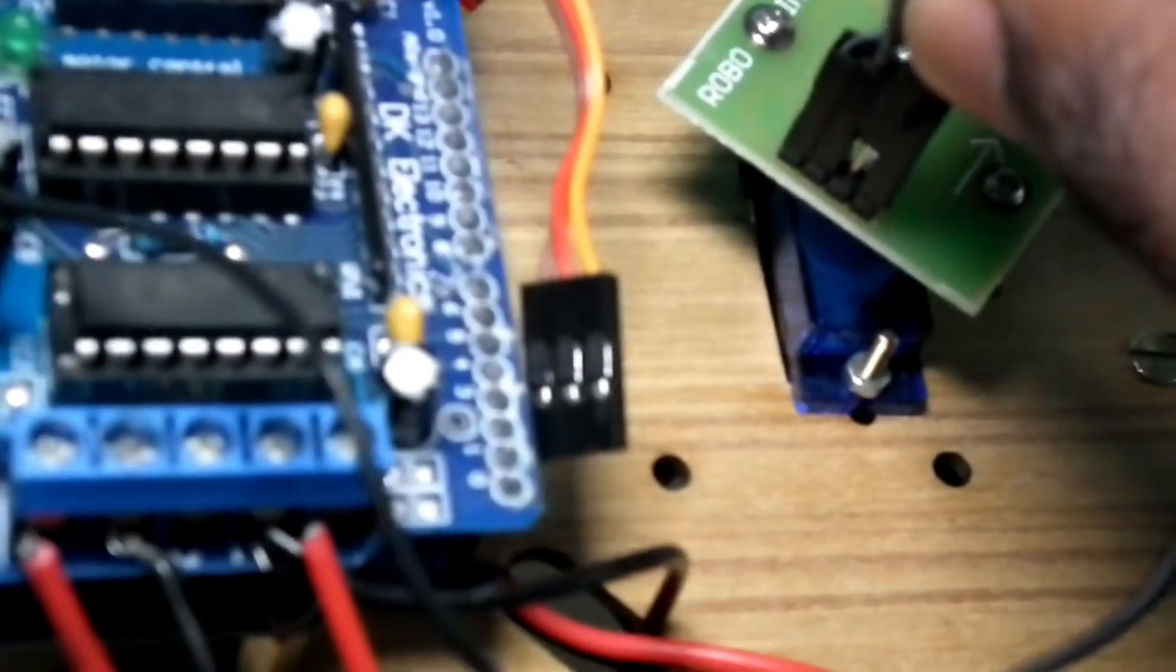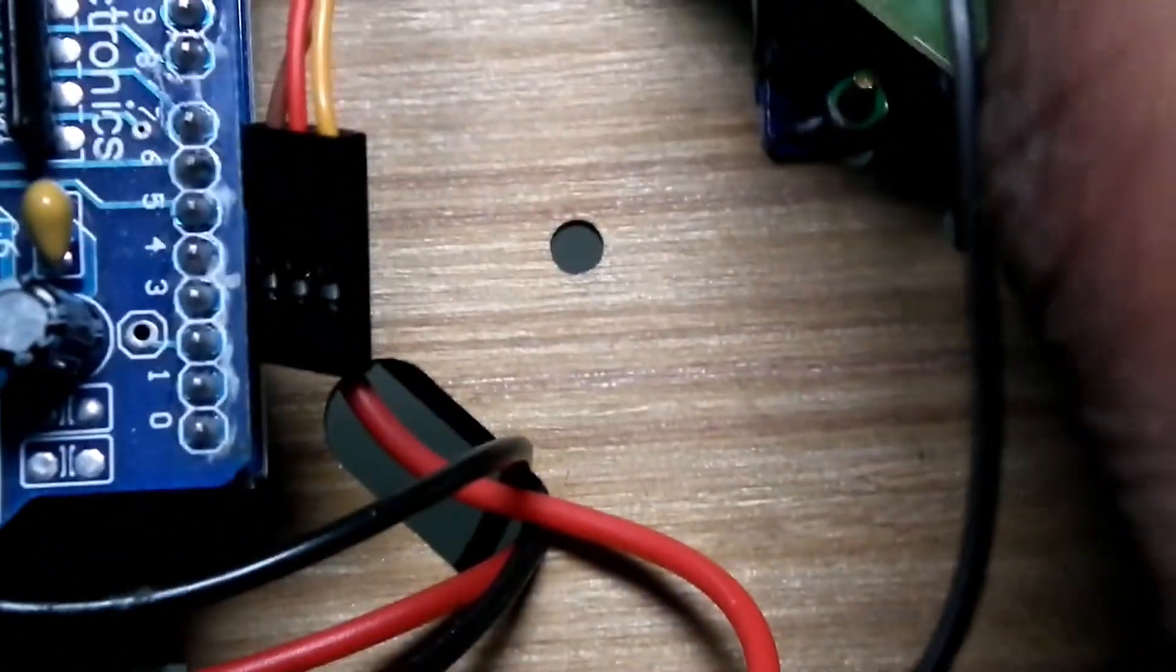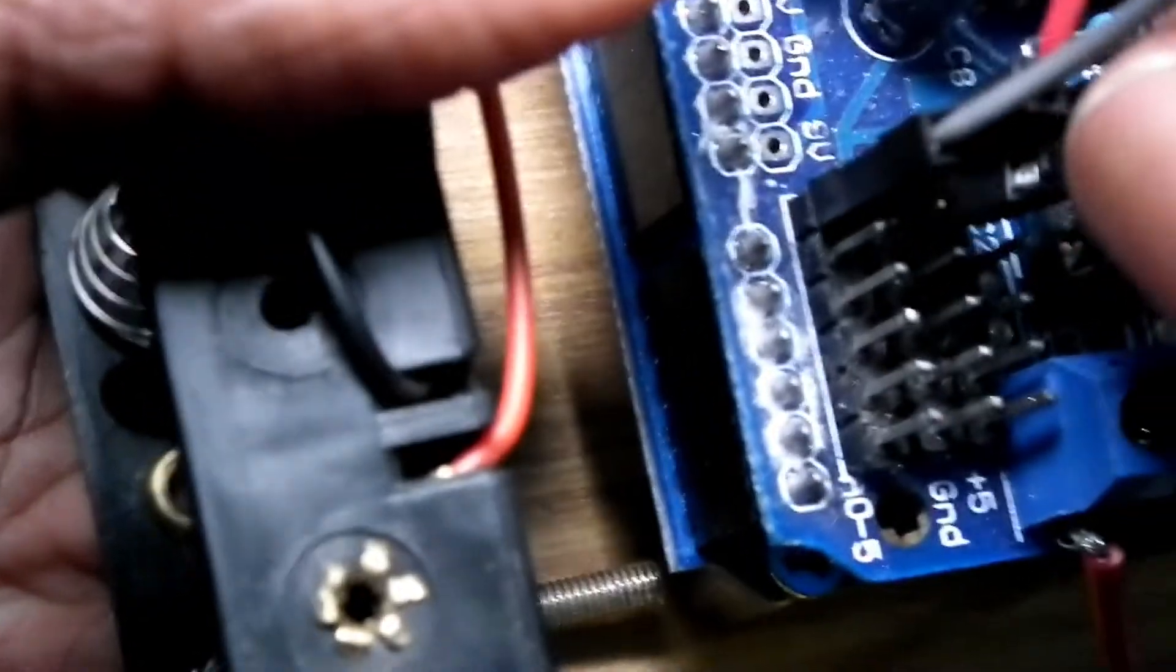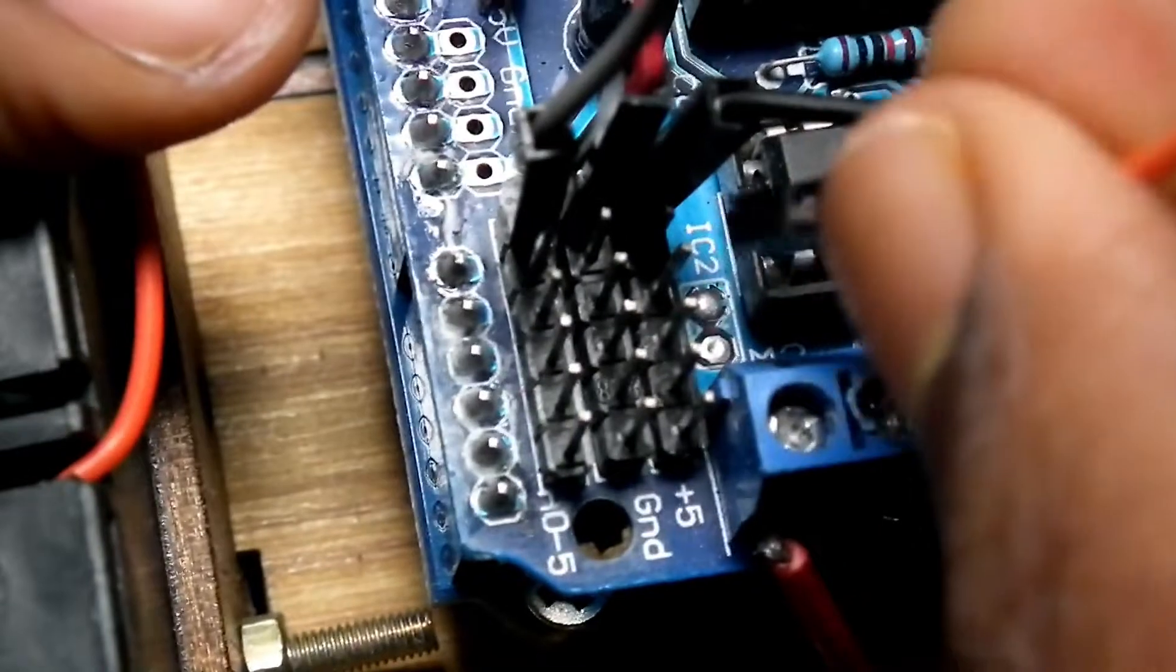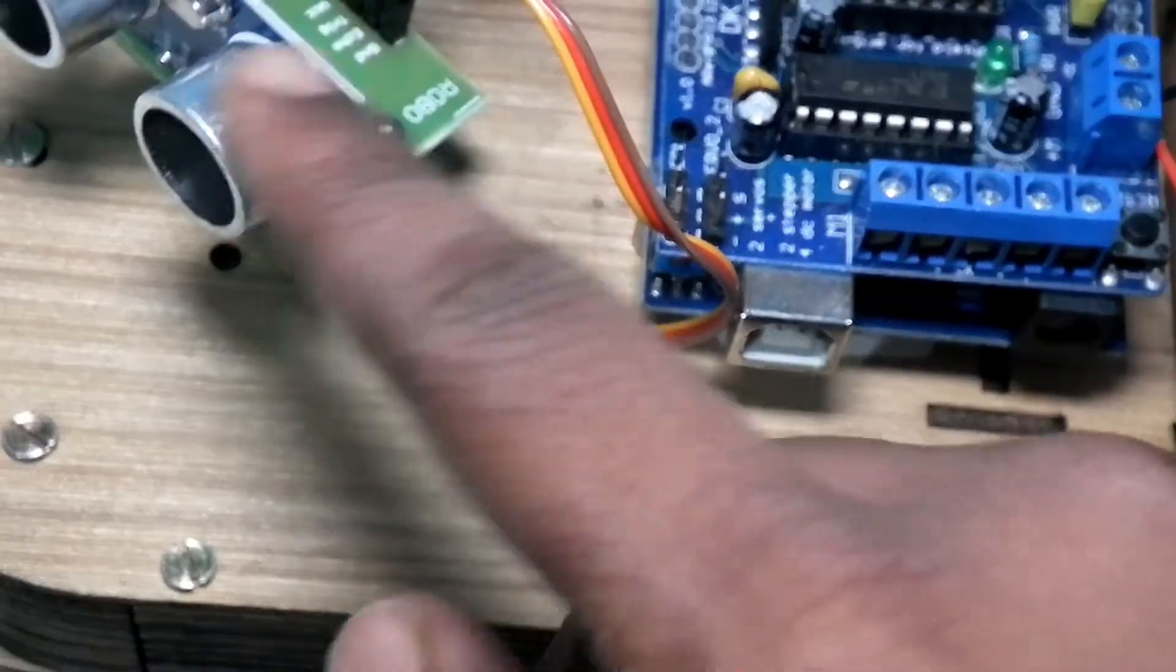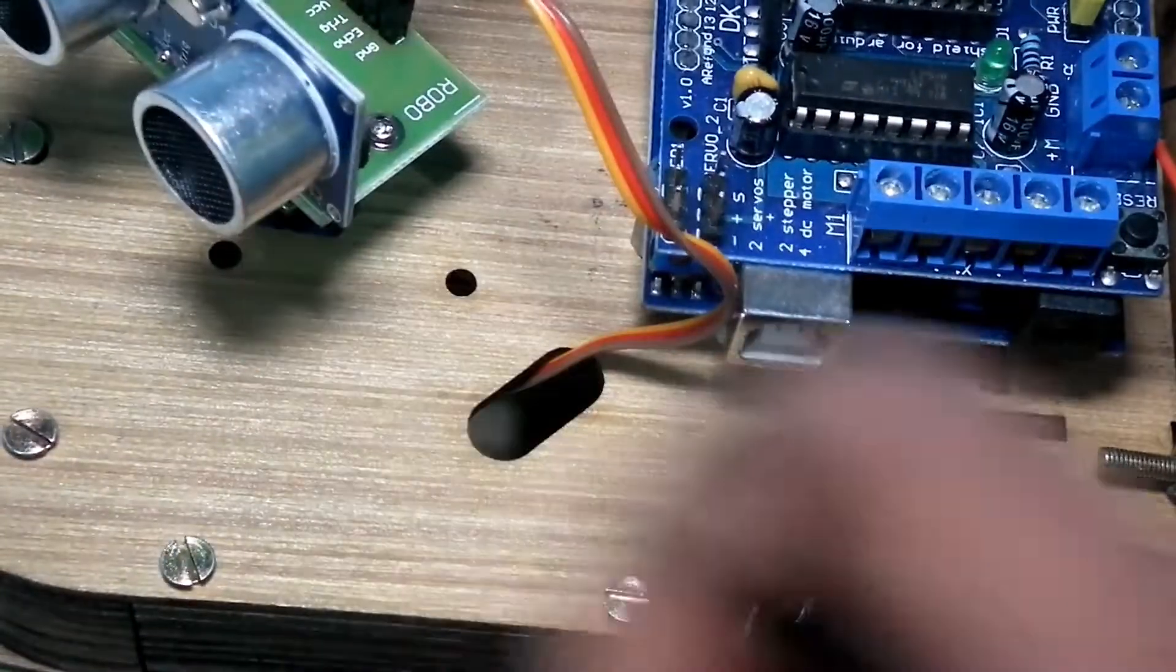And take another wire and connect it to another terminal over here, last one, which is the trig. We will be connecting this orange one to the second terminal near to the first terminal over here. So we have done the connections for the ultrasonic sensor.